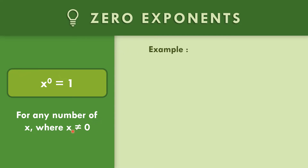In example number one, b to the zero. Based on the rule of zero exponents, x to the zero equals one, so b to the zero is equal to one.